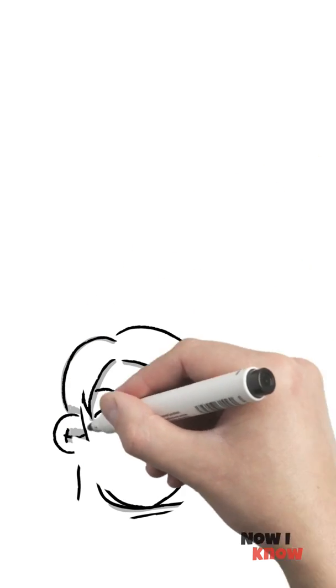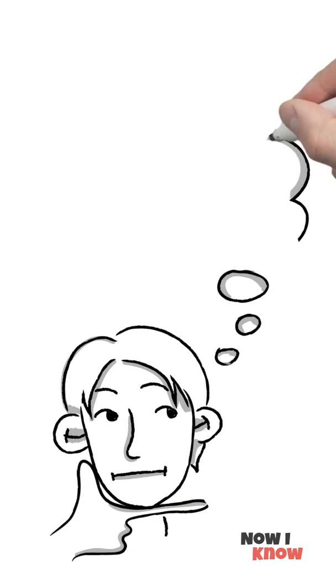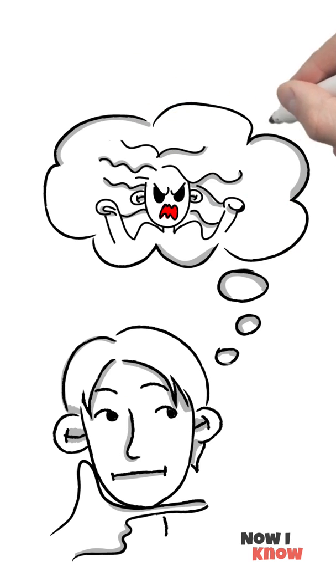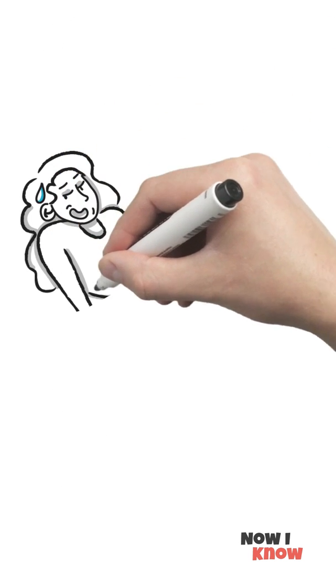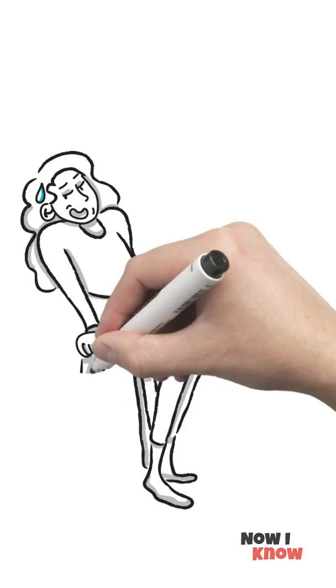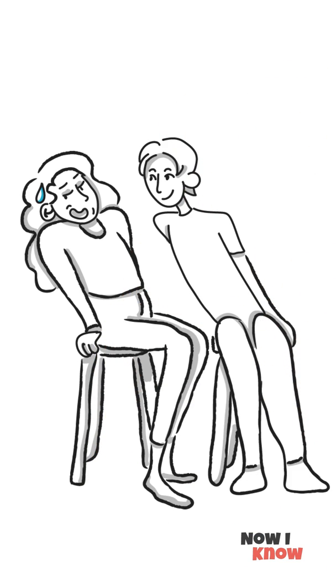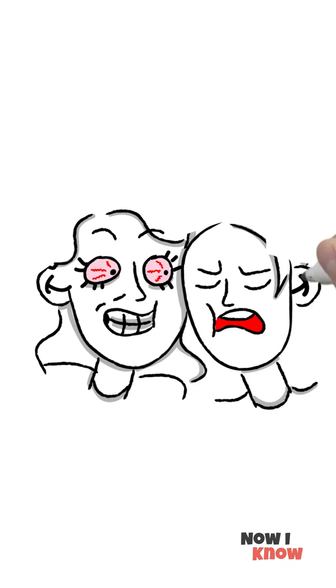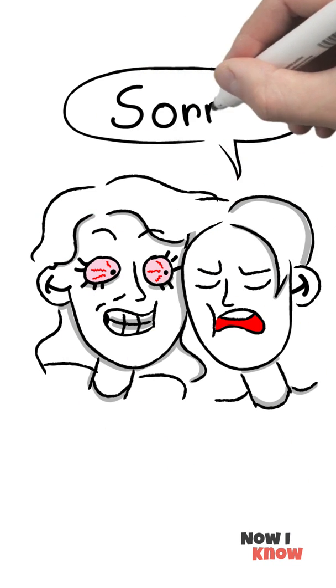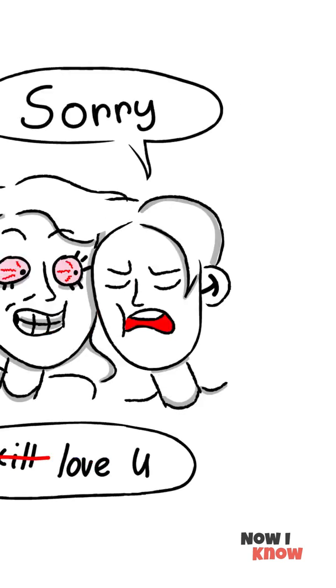When you have to discuss something very serious with anyone and expect the wagons to circle up defensively, try sitting right next to your counterpart rather than across from them. It'll make them feel like you're both on the same side. Literally. Also, it feels really awkward to get mad and yell at someone who is sitting that close and next to you.